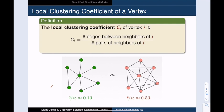For example, in this green network, the central vertex has six neighbors. So therefore there are six choose two, or fifteen ways to pair them up. And among these fifteen pairs, only two are connected by edges. So the clustering coefficient of the central vertex is two over fifteen.